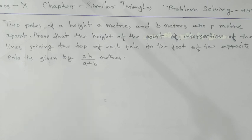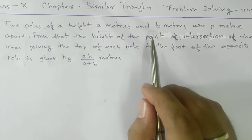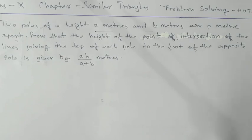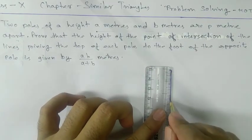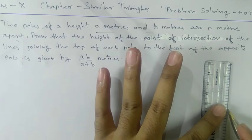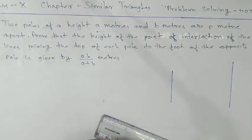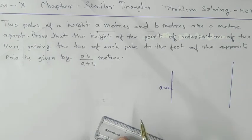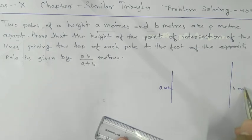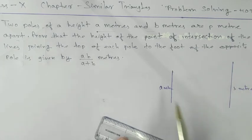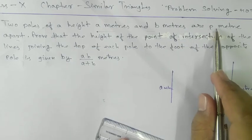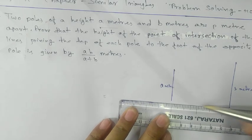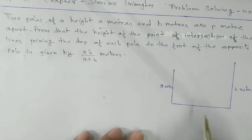Two poles of height A meter and B meter are P meter apart. So we have two poles — this is one pole and this is another pole. One is A meter, this one is B meter, and they are P meter apart from each other. So the distance between them is P meter.